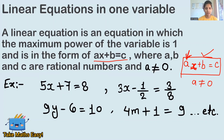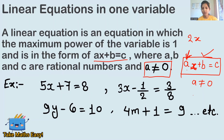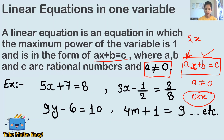Why can't a be zero? Because if you write zero into x, it becomes zero — so the equation loses its variable term entirely. That's why a cannot equal zero. However, b and c can be zero — no problem. In the place of b and c, any rational number is fine. Simply remember: the highest power of the variable will be one, and there will be only one variable present. That is a linear equation in one variable.